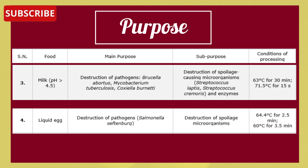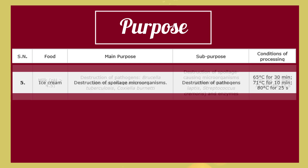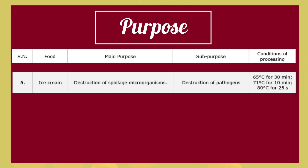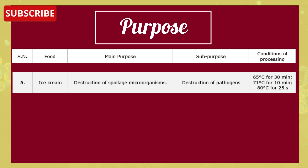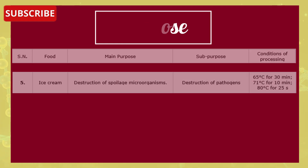For liquid egg, conditions of processing are 64.4°C for 2.5 minutes or 60°C for 3.5 minutes. The last product is ice cream. The main purpose is the destruction of spoilage-causing microorganisms. Processing conditions are 65°C for 30 minutes, 71°C for 10 minutes, and lastly 80°C for 25 seconds.